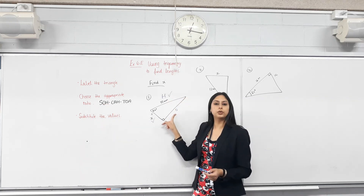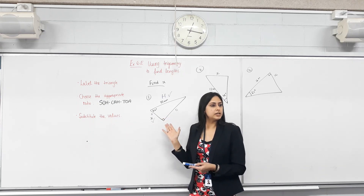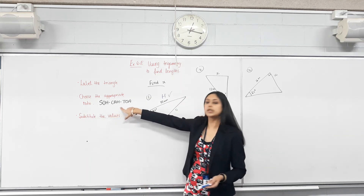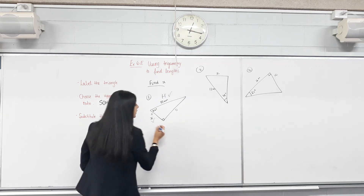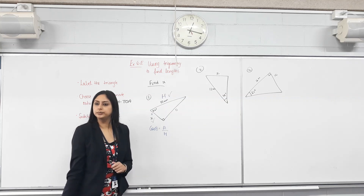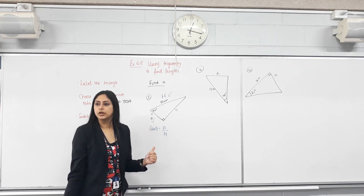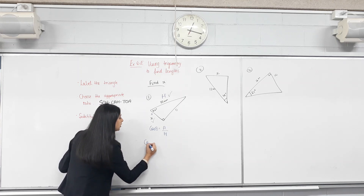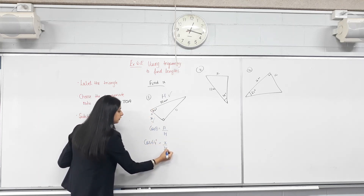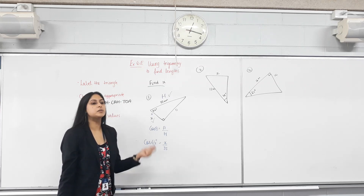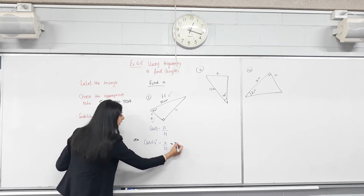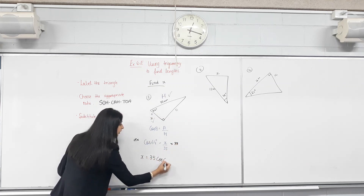Which ratio — sine, cos, or tan — has A and H in it? Cosine. That's what it means: choose the appropriate ratio. We have nothing to do with O — it's not unknown, they haven't asked us to find it and haven't given it. So cosine is the appropriate ratio. Now write: cos θ = adjacent over hypotenuse. We've labelled the triangle, we've decided which ratio to use. Now we substitute: cos 64° = x over 35. Multiply both sides by 35, so x = 35 × cos 64°.